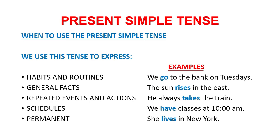Schedules — for example, we have classes at 10am. And permanent events — for example, she lives in New York. If you see those examples, you can understand how to use the present simple tense. Remember, we use this tense to express habits and routines, general facts, repeated events and actions, schedules, and permanent events. Let's continue.